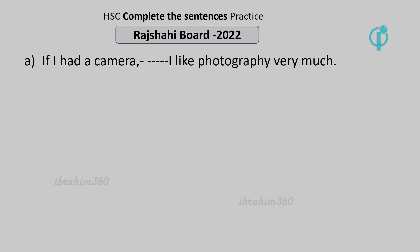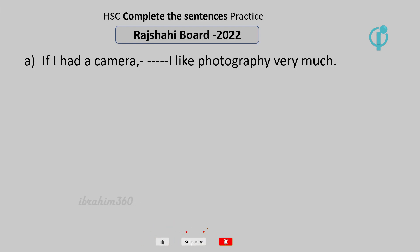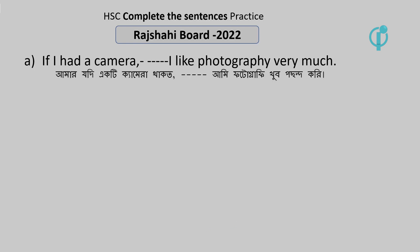If I had a camera — if we don't want to take the conditionals — we will complete the rule. I like the same thing: if I had a camera, I like photography very much. What do I do then? It gives me one clue — you have to choose the fact that the first statement will be easy.